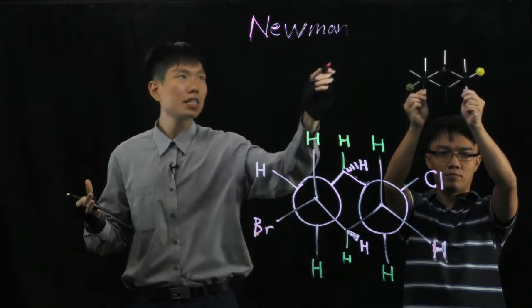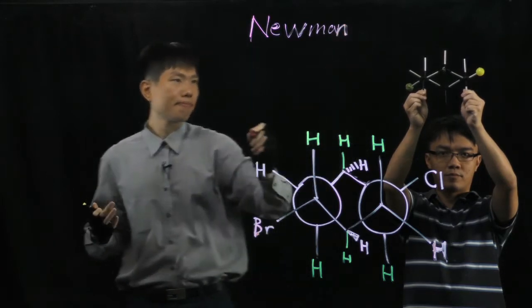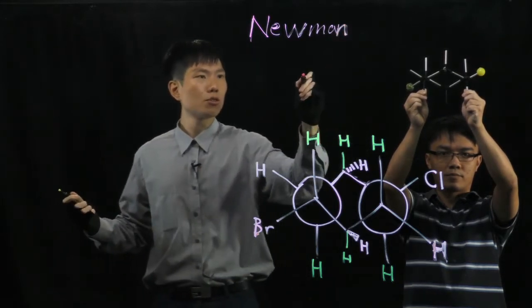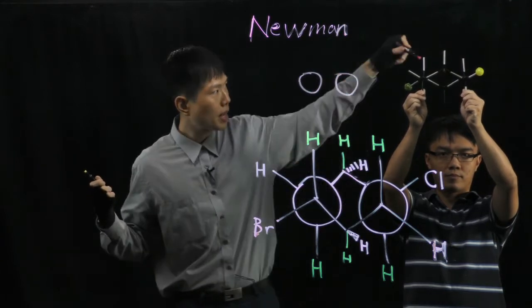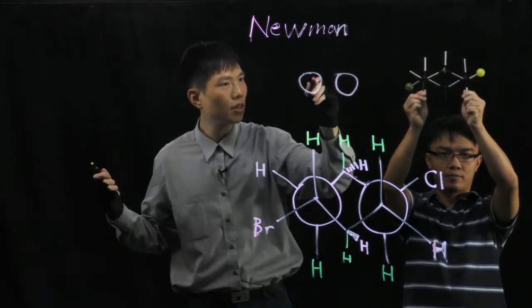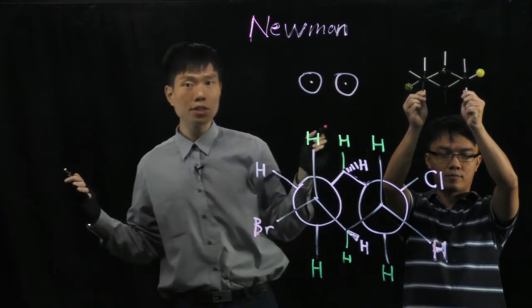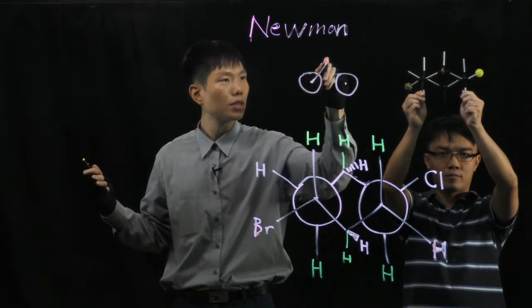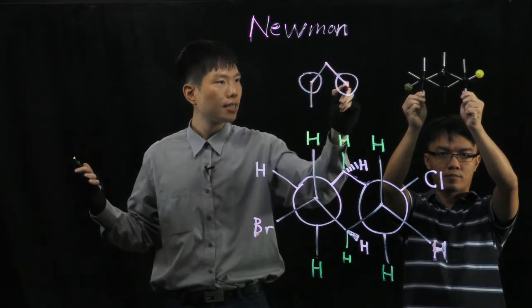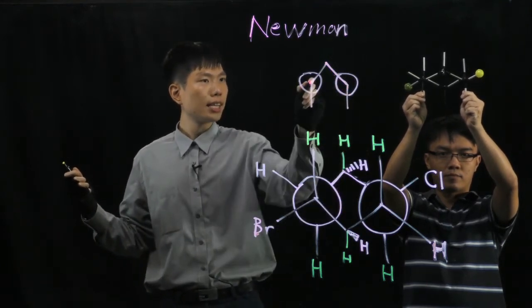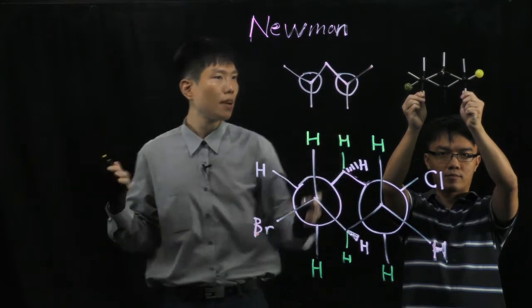For Newman projection of a cyclohexane, first up we need to draw 2 circles. In this case, the front carbon has a V, so from the middle we draw the two dots. The axial position and the last equatorial position. We have this template.